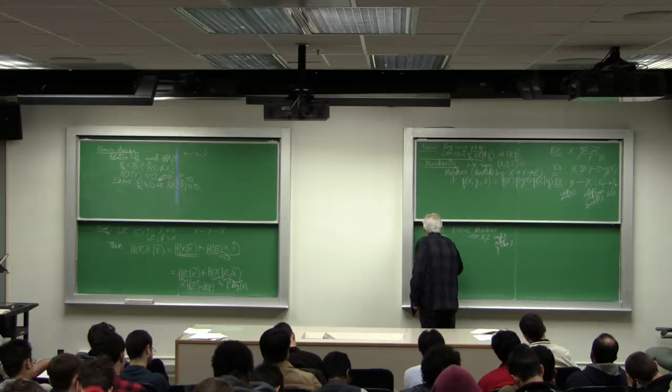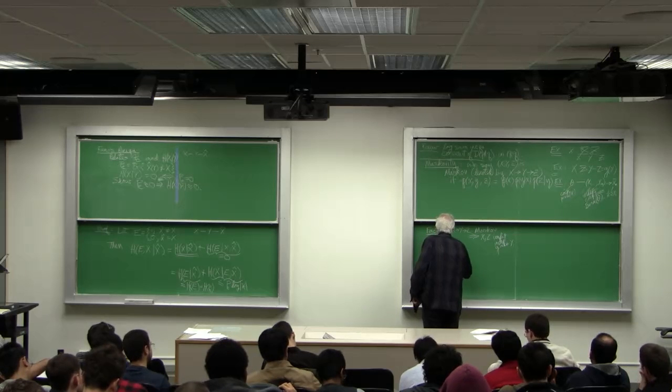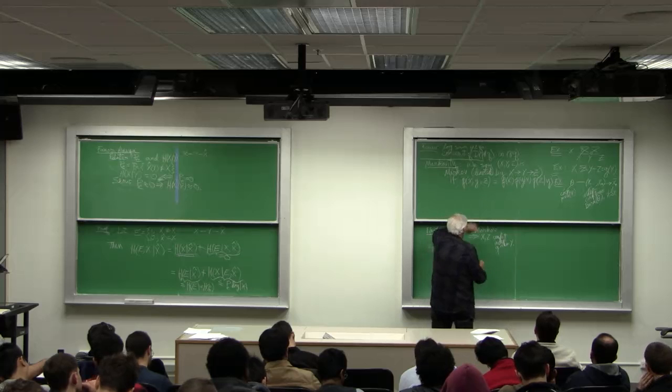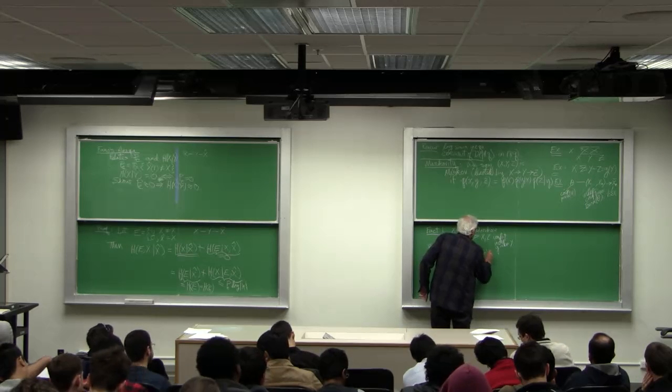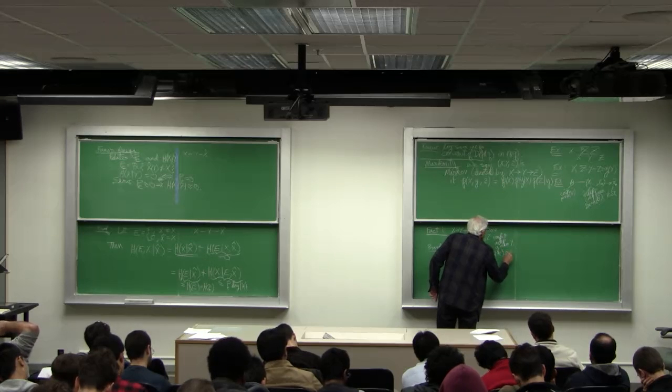Proof: P of X, Y, Z for the Markov is, as I've written there, P of X, P of Y given X, P of Z given Y.